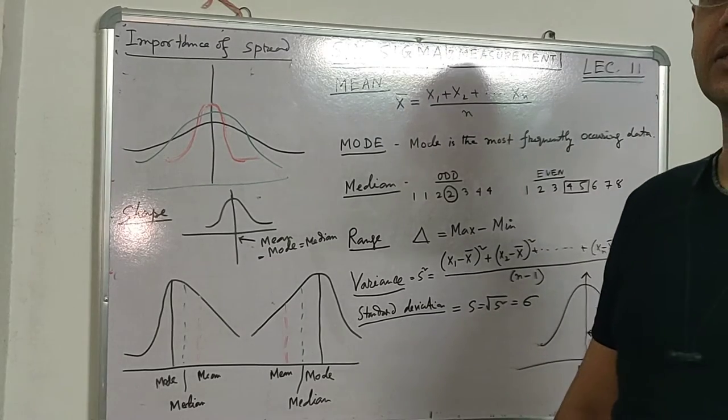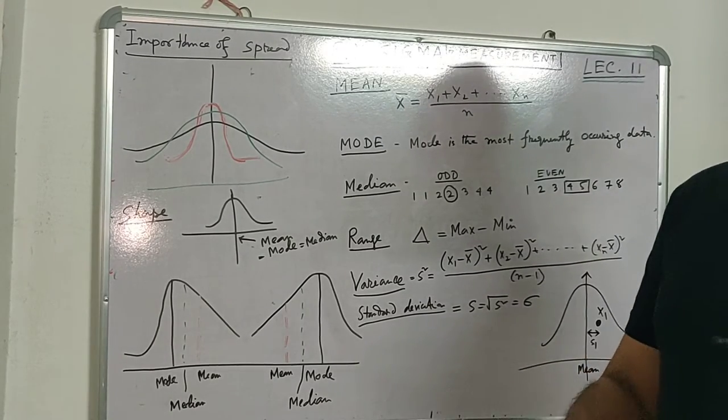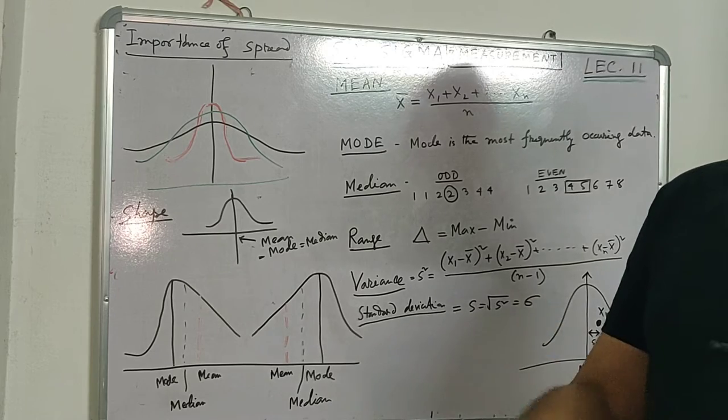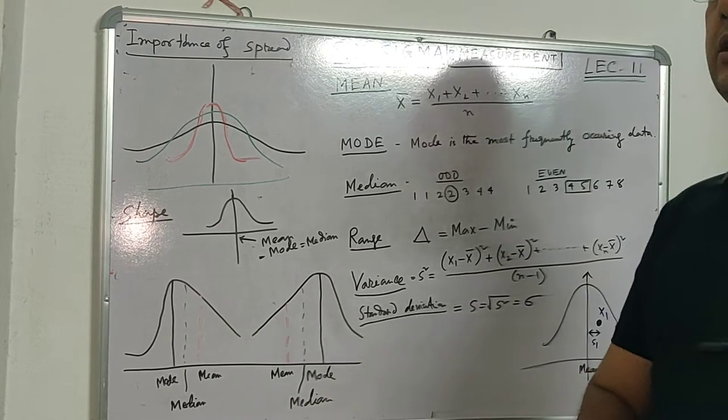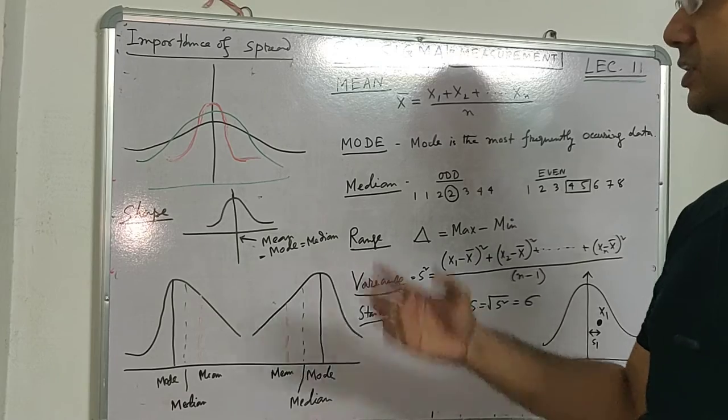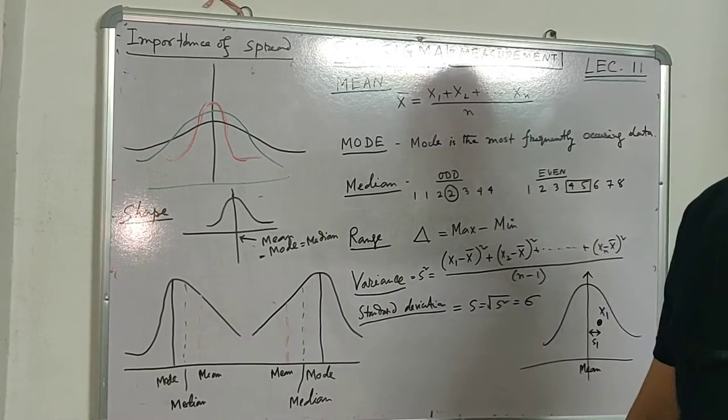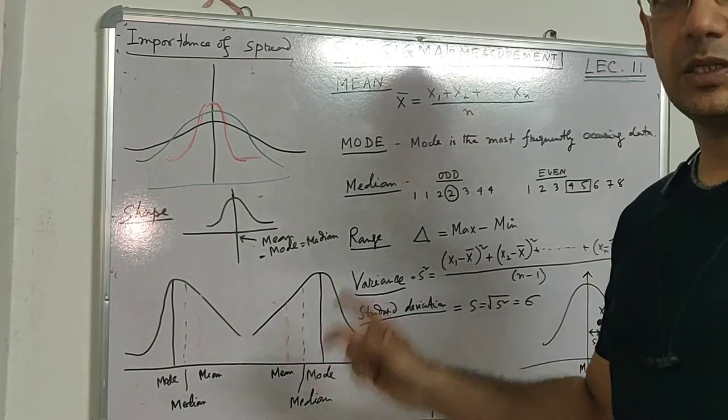We covered discrete data, continuous data, process, how measurements should be taken, at what frequency, location-wise, and process-wise. In further detail, we will discuss data and a few other concepts in this lecture.